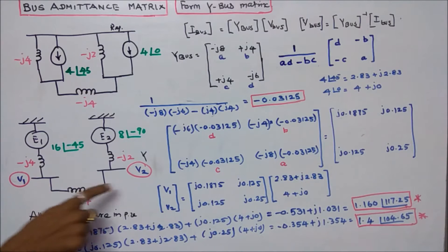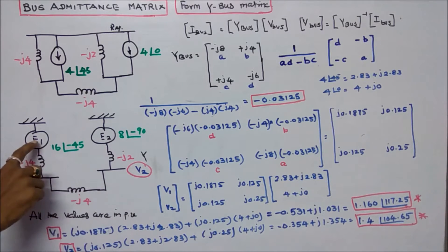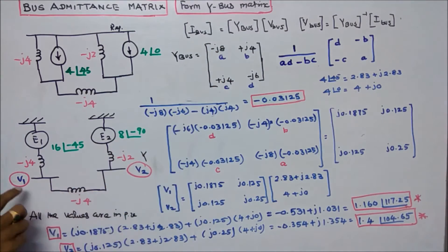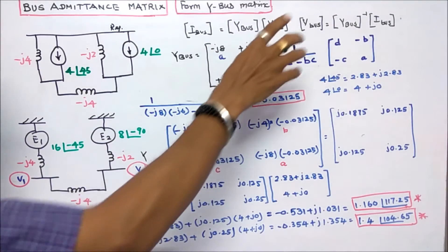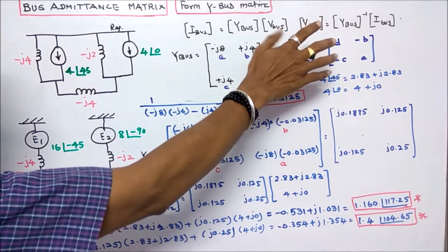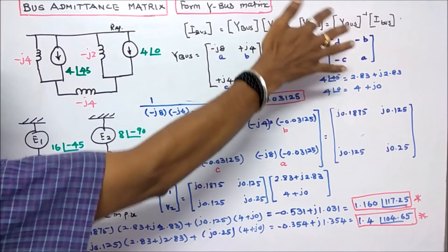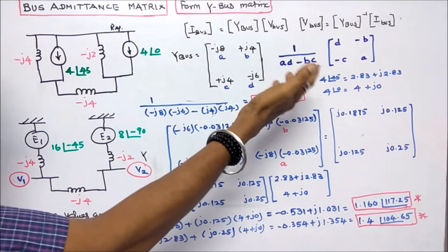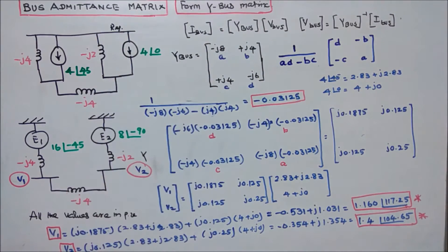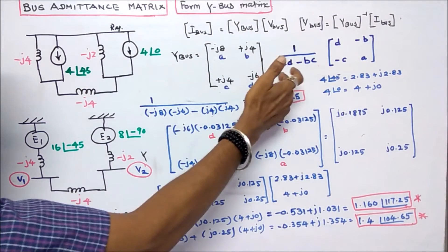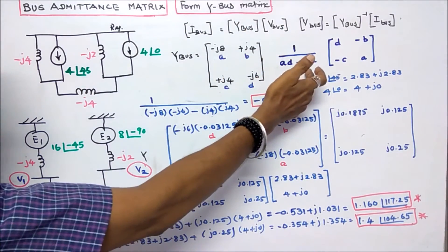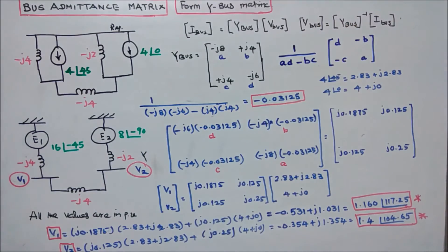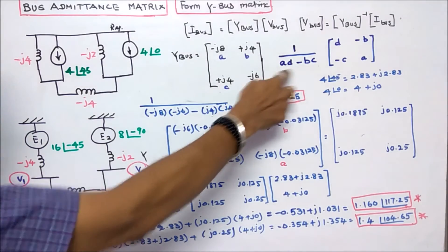Our aim is to find the bus voltages V1 and V2, denoted E1 and E2. Therefore, V-bus equals Y-bus inverse into I-bus. First, we must find the inverse of Y-bus. For a 2x2 matrix, the inverse is 1 divided by AD minus BC, multiplied by the matrix [D, minus B; minus C, A].